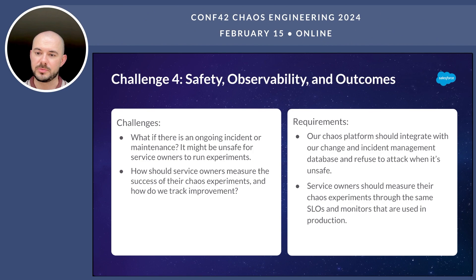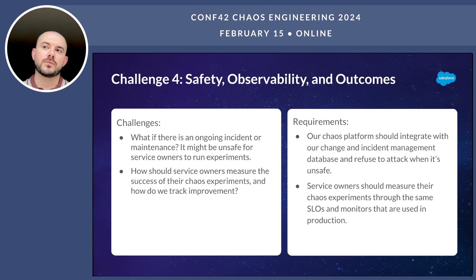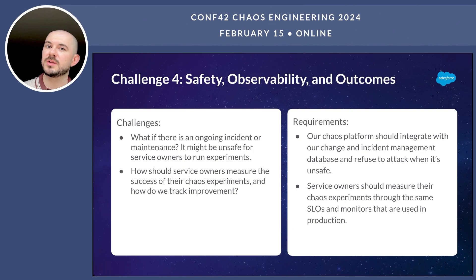The fourth challenge is around safety, observability, and outcomes. We started to ask questions like: what would happen if there was an ongoing incident, maintenance, or patching? It might be unsafe for service owners to run experiments at that time. And how should service owners measure the success of their chaos experiments? How do we track improvement? Concretely, the chaos engineering platform should integrate with our change and incident management database and refuse to attack if it's unsafe. For observability, service owners should measure their chaos experiments through the same SLOs and monitors they use in production. This creates a positive feedback loop so that learnings can be fed back into SRE principles for production operations and used to evaluate service health coming out of chaos experimentation.